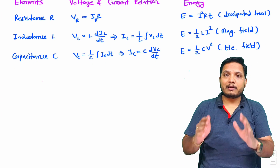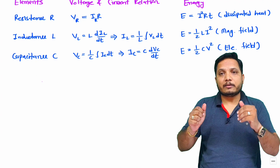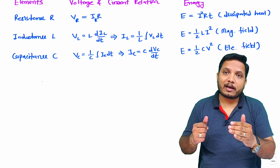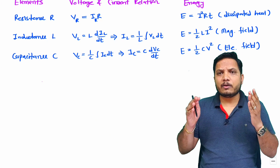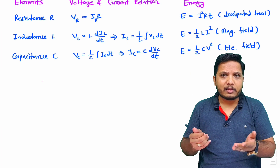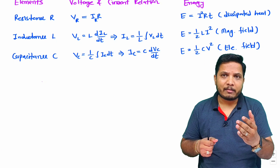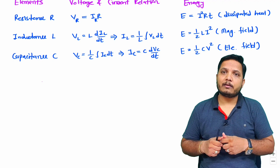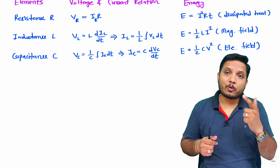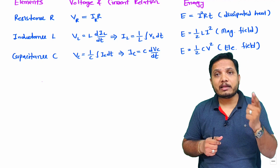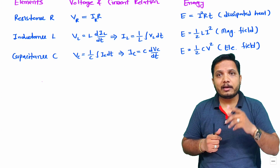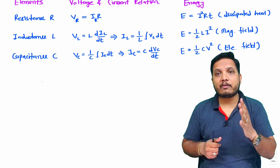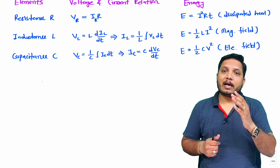To summarize: a resistor dissipates energy in the form of heat, equal to I²Rt (also expressible as VIt, or power times time). An inductor stores energy in the form of a magnetic field, and a capacitor stores energy in the form of an electric field, equal to ½CV².